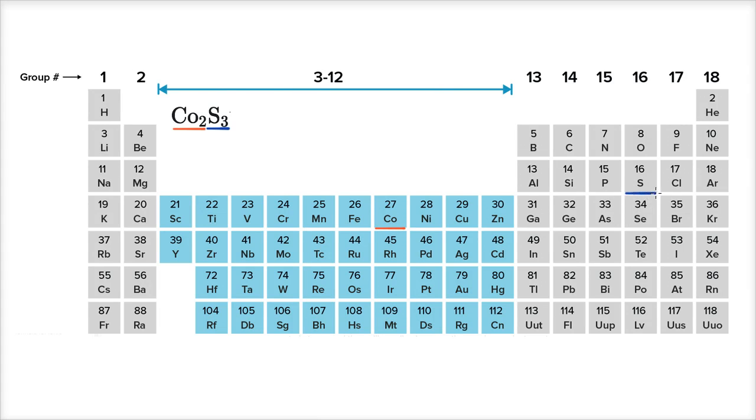In its group, it would want to gain two electrons in order to have a complete outer shell. It's just like oxygen. It wants to gain two electrons. So the sulfide anion will look like this.